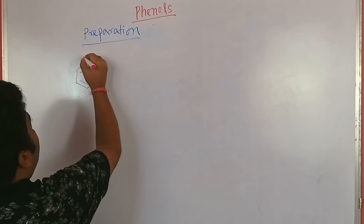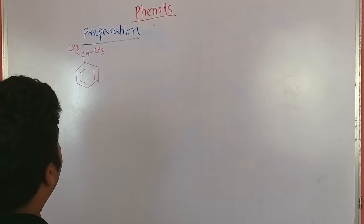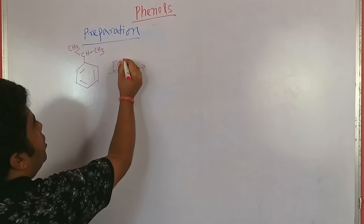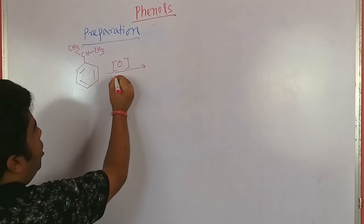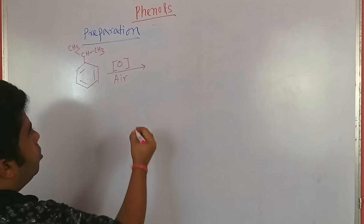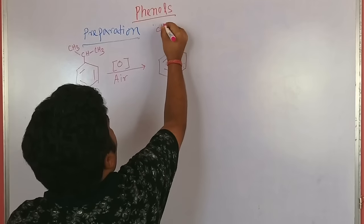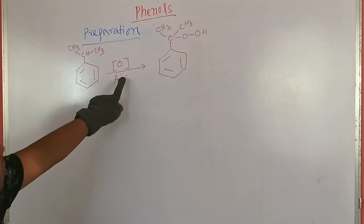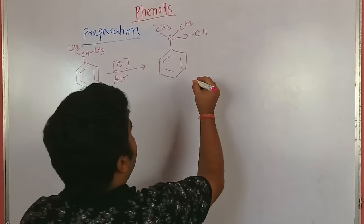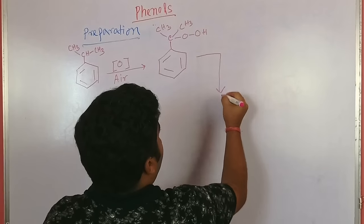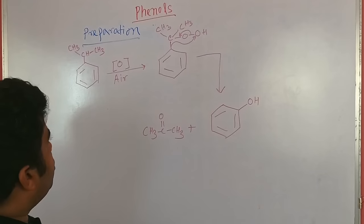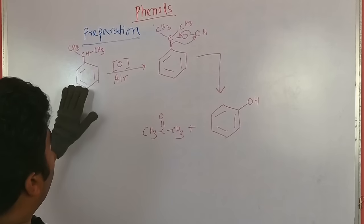Next, phenol can be made from cumene. Cumene, when air-oxidized in the presence of air and light, forms a peroxide. This peroxide undergoes decomposition to give phenol and acetone. This is an important reaction — the cumene process for phenol synthesis.